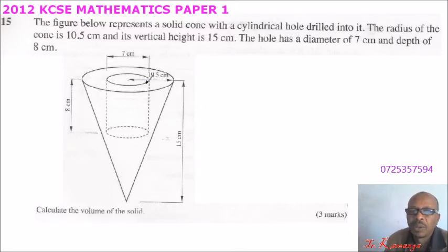So the radius of the cone is 10.5 cm, the diameter of the hole is 7 cm, the height of the hole is 8 cm, the height of the cone is 15 cm. Calculate the volume of the solid.